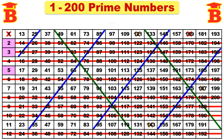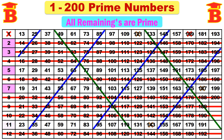That's all — all the remaining numbers are prime numbers. Therefore, the prime numbers from 1 to 200 are: 2, 3, 5, 7, 11, 13, 17, 19, 23, 29, 31, 37, 41, 43, 47, 53, 59, 61, 67, 71, 73, 79, 83, 89, 97, 101, 103, 107, 109, 113, 127, 131, 137, 139, 149, 151, 157, 163, 167, 173, 179, 181, 191, 193, 197, and finally 199. These are the prime numbers from 1 to 200.